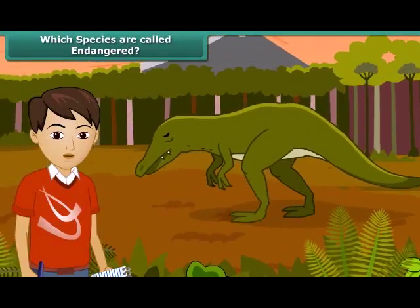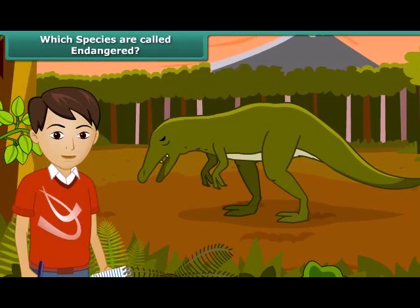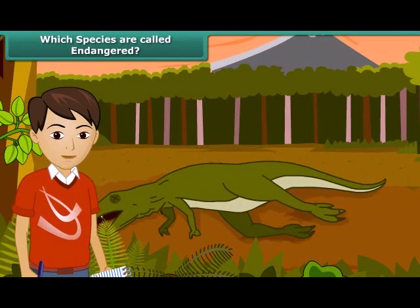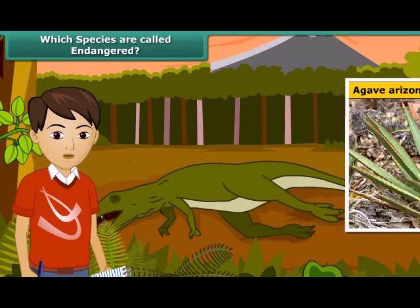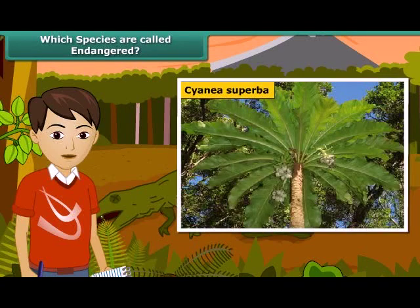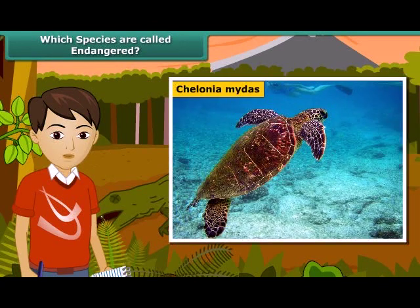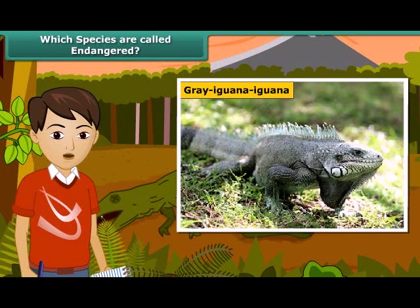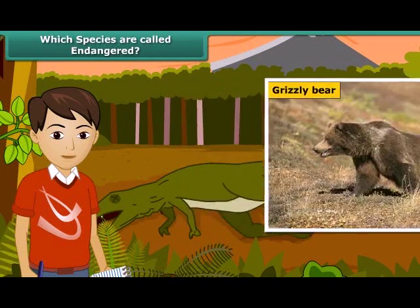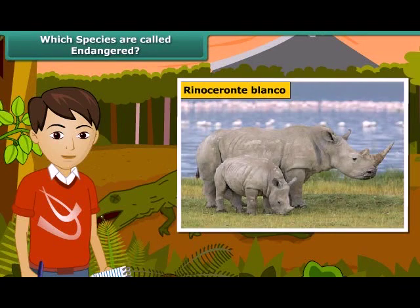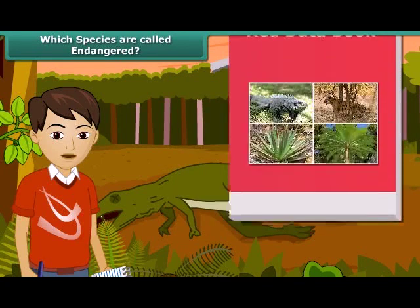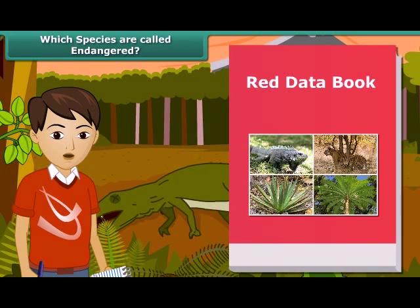You must have heard about dinosaurs — they existed hundreds of years ago but are now extinct. Many animals and plants have become extinct, whereas some are on the verge of extinction. Species whose numbers are diminishing to a level that they might face extinction are known as endangered species. The Red Data Book is the source book which keeps a record of all the endangered animals and plants.